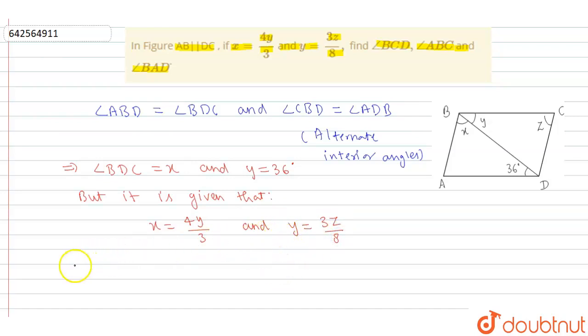Okay, so x is equal to 4 multiply y, which is 36 upon 3. We can solve 4 multiply 12, 3 into 36. So, 12, 12 fours is 48. So, it will be 48 degrees.